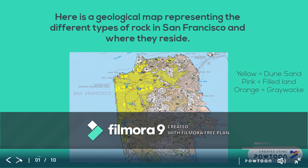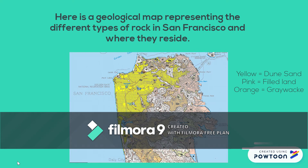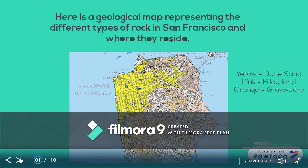Here is a geological map showing San Francisco and what rocks make up the different regions. Yellow is sand dunes, pink is landfill, and orange is gray rock. As you can see, the city is divided with different rocks or materials making up the landmass.